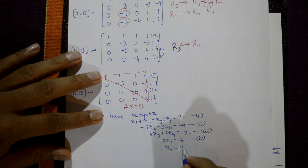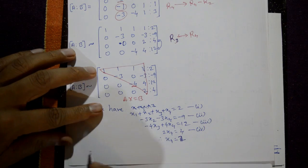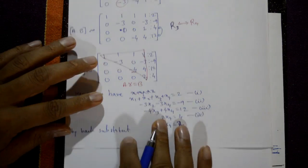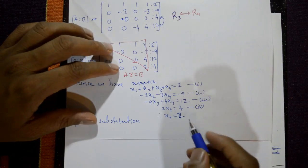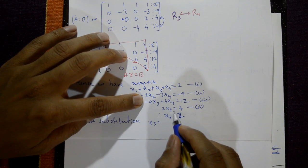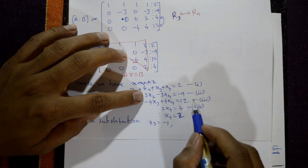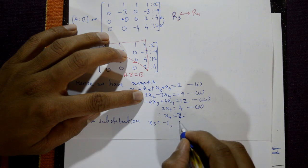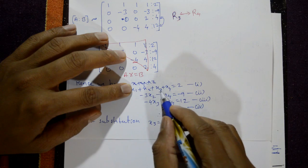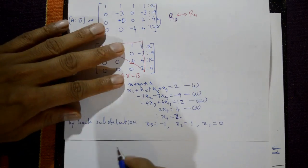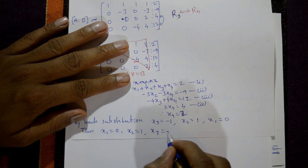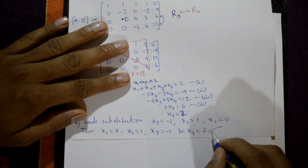From equation 4: x4 = 4/2 = 2. By back substitution, putting x4 = 2 into equation 3 gives x3 = -1. Substituting x4 = 2 into equation 2 gives x2 = 1. Substituting x2, x3, x4 into equation 1 gives x1 = 0. Thus the required solution is x1 = 0, x2 = 1, x3 = -1, and x4 = 2.